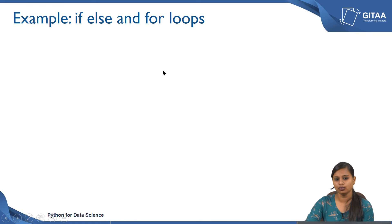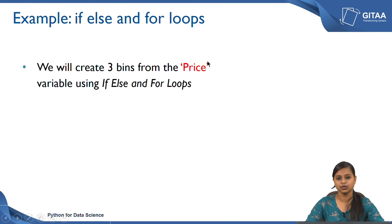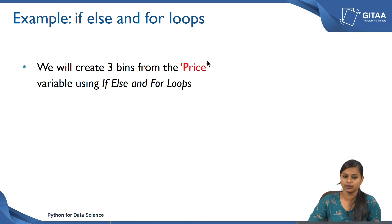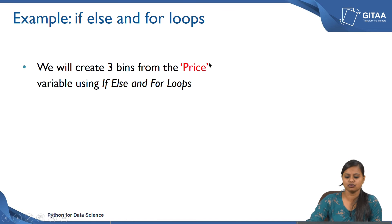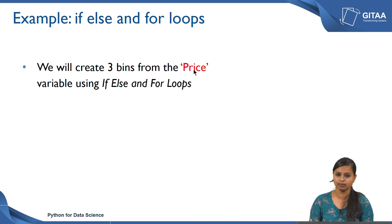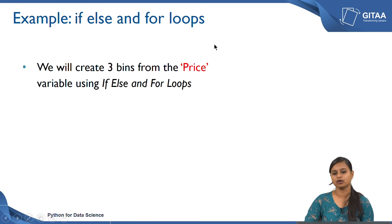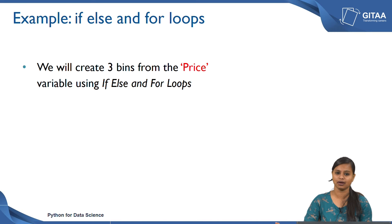Now we are going to see an example using if-else and for loops. We have been working with a dataset called Toyota, where we are looking at how to read it and do basic pandas DataFrame operations. I have used a single variable called price, which represents the price of pre-owned cars. Using if-else and for loops, I am going to create three bands from the price variable, because price is a continuous variable and I want to segregate those values into three buckets.